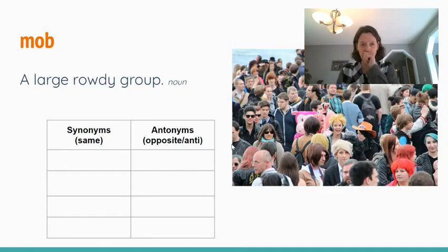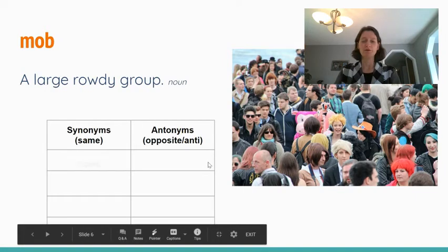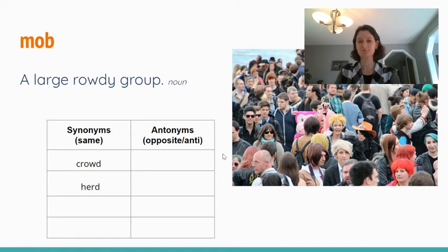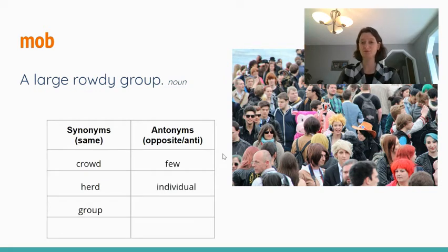Our next word is mob, a large rowdy group. Words that might mean the same sort of thing as mob would be crowd or herd, like a big herd of people. Words that mean the opposite of a big group would be few. There were a few people or a few things. Individual, which means just one, is the opposite or an antonym for mob.